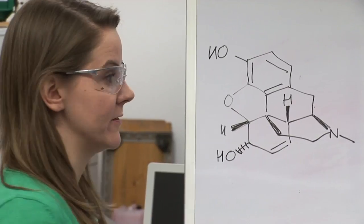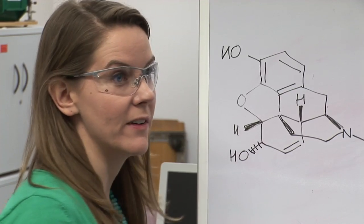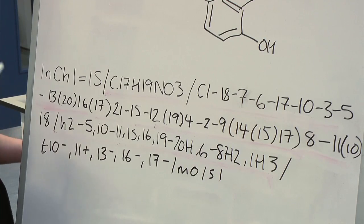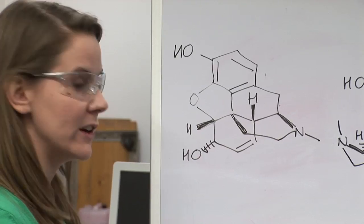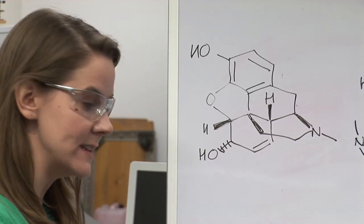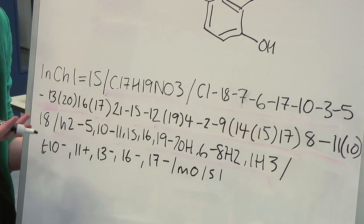So the INCHI is like a barcode for the substance because regardless of how different journals, supplier websites, or databases represent the structure of the chemical, they can all use the same universal identifier, the INCHI, to represent the molecule.